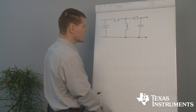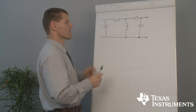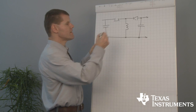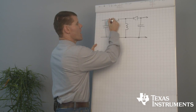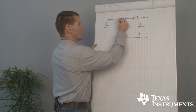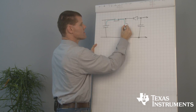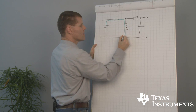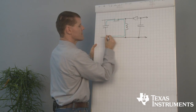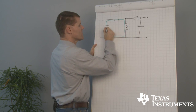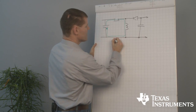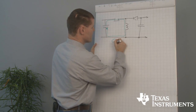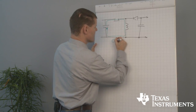Let's have a look at the on-state. The high side switch closes and forces a current through the inductor toward ground. That's our on-state.